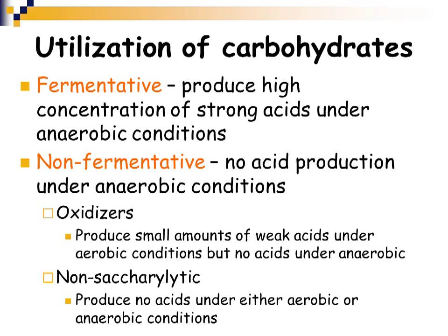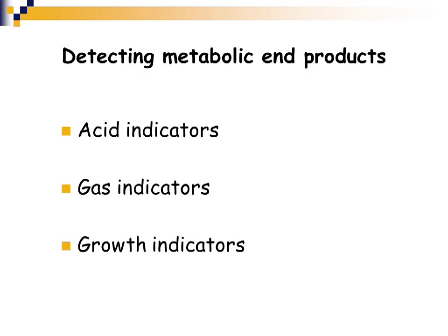These metabolic features are important for differentiating one organism from another. In many biochemical tests throughout microbiology, we detect metabolic end products that usually produce some sort of reaction — often a color reaction. Many tests use acid indicators that change color when acids are present. Some tests use gas indicators, since some organisms generate gas byproducts, and there are also growth indicators.